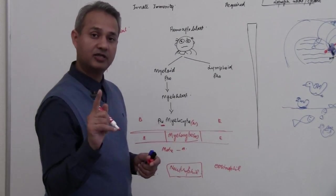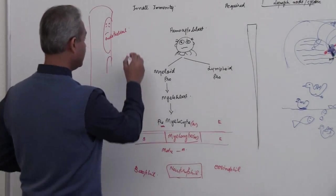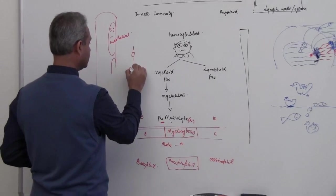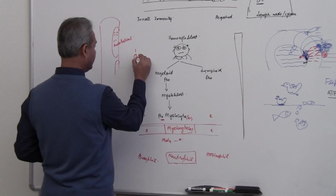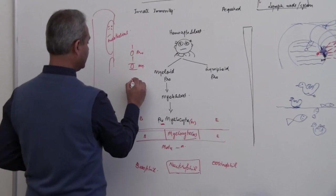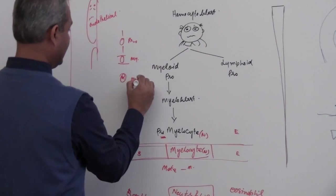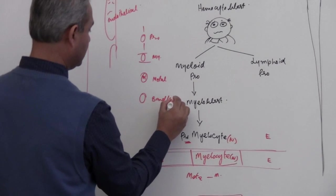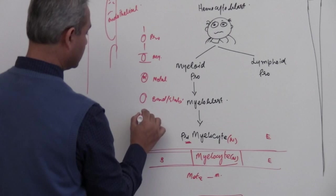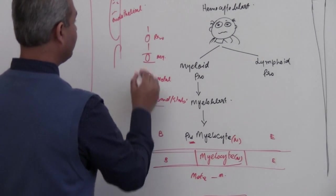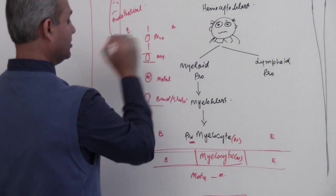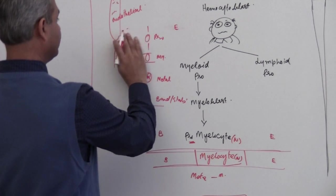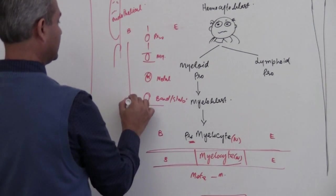Many books actually for the neutrophil give all the steps, that is if this is myelocyte they give a pro, a meta, a band, I'll talk about band in a second or stab and then mature. But for the eosinophil and basophil they just directly make them.